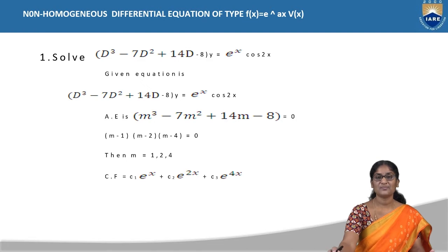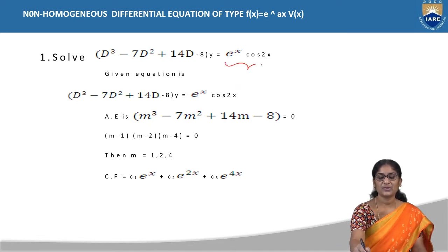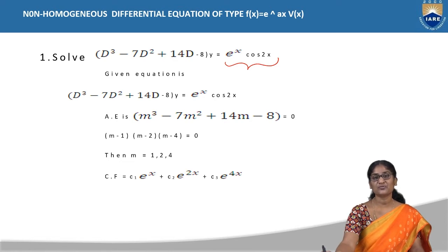The problem is: solve the higher order differential equation (D³ - 7D² + 14D - 8)y = e^x · cos2x. We can see that Q(x) is the product of two different functions e^x into cos2x. There are two parts to the general solution of a higher order differential equation: the complementary function and the particular integral.